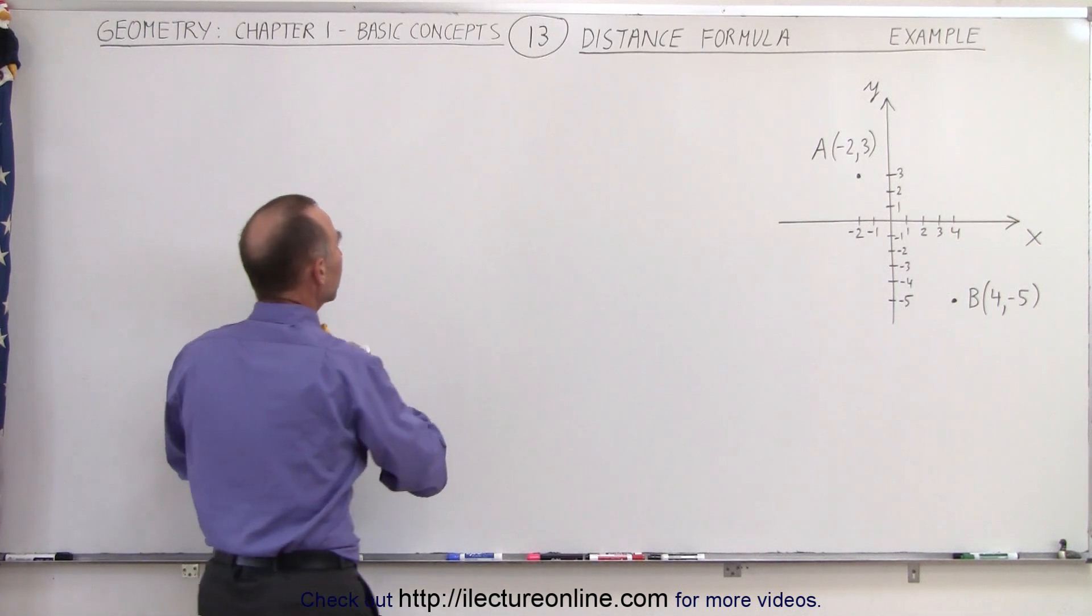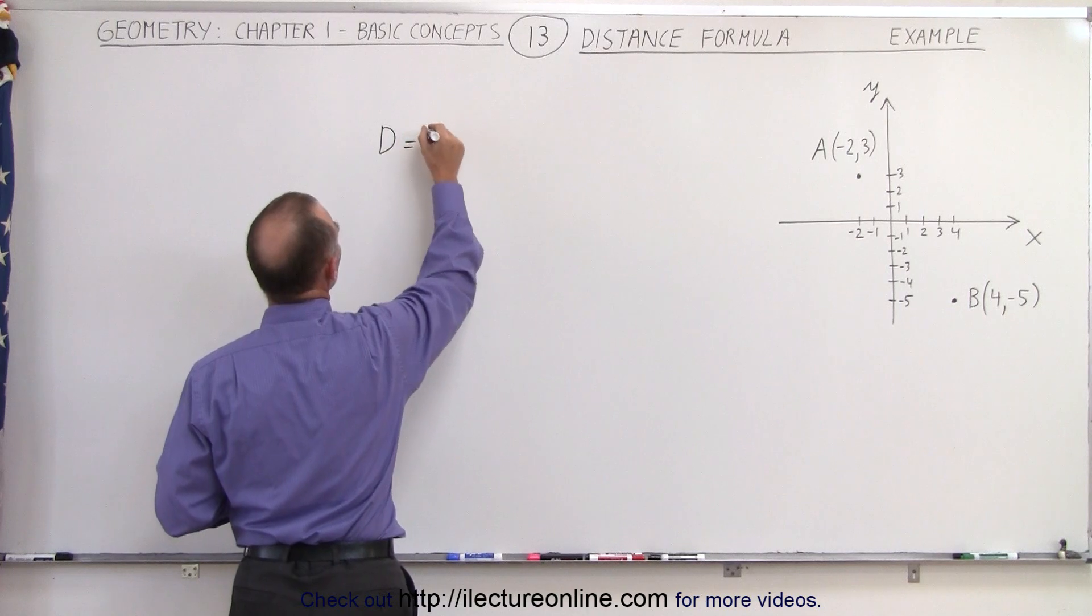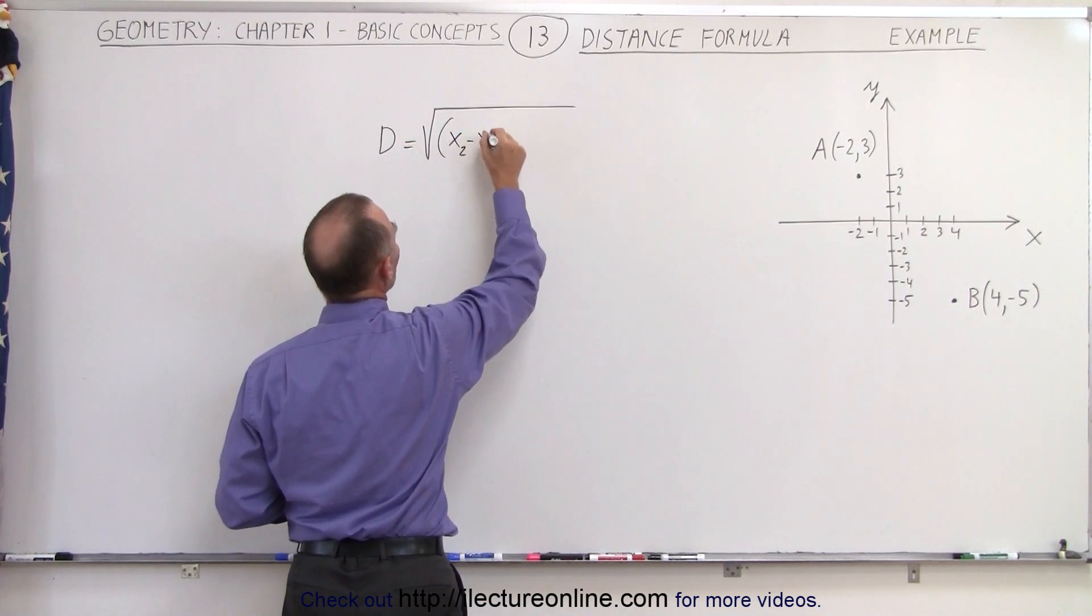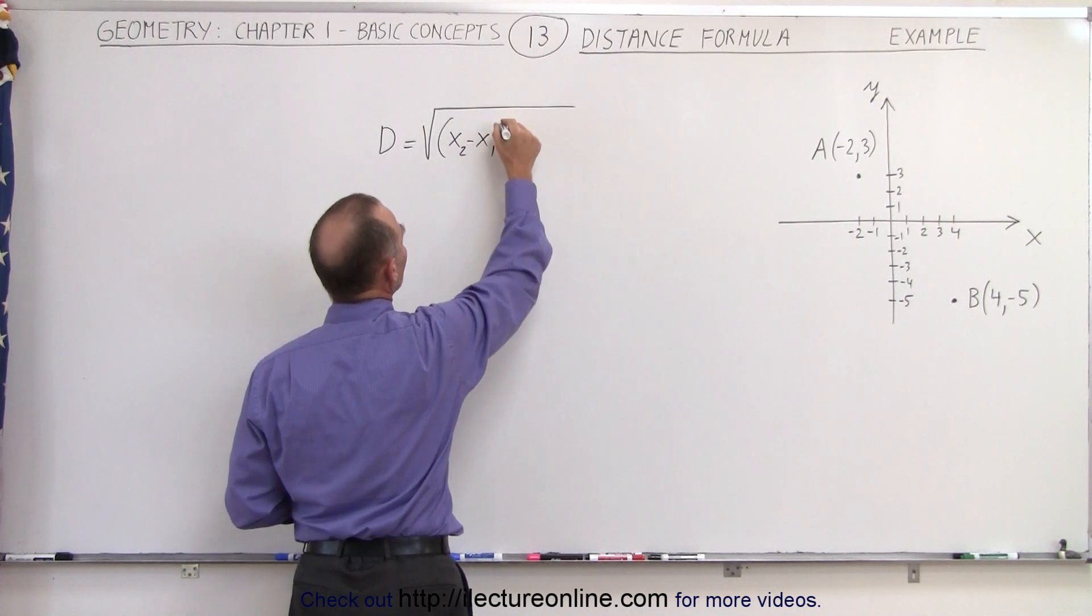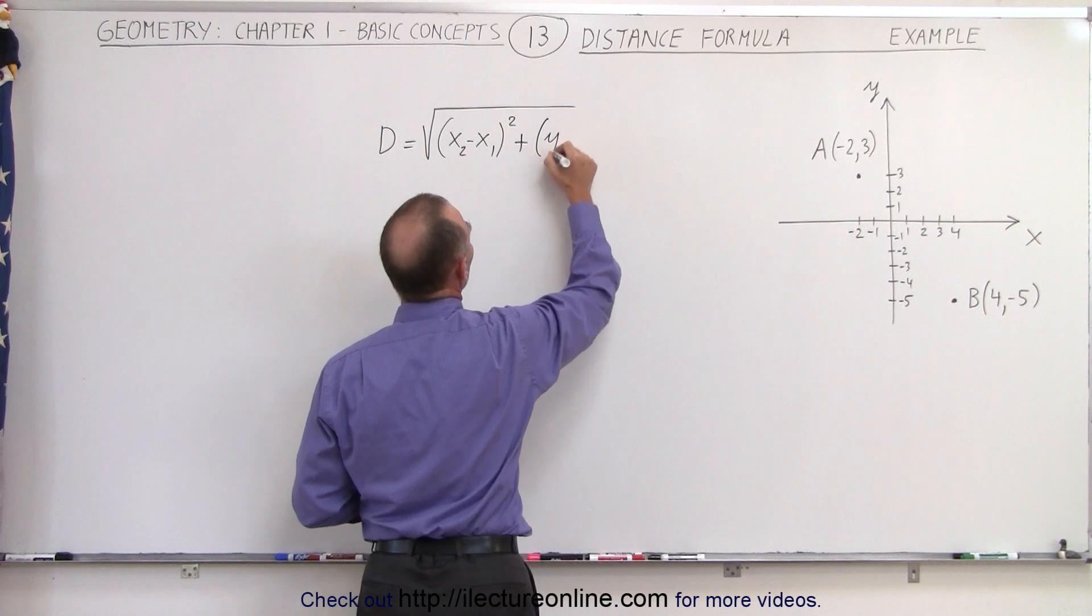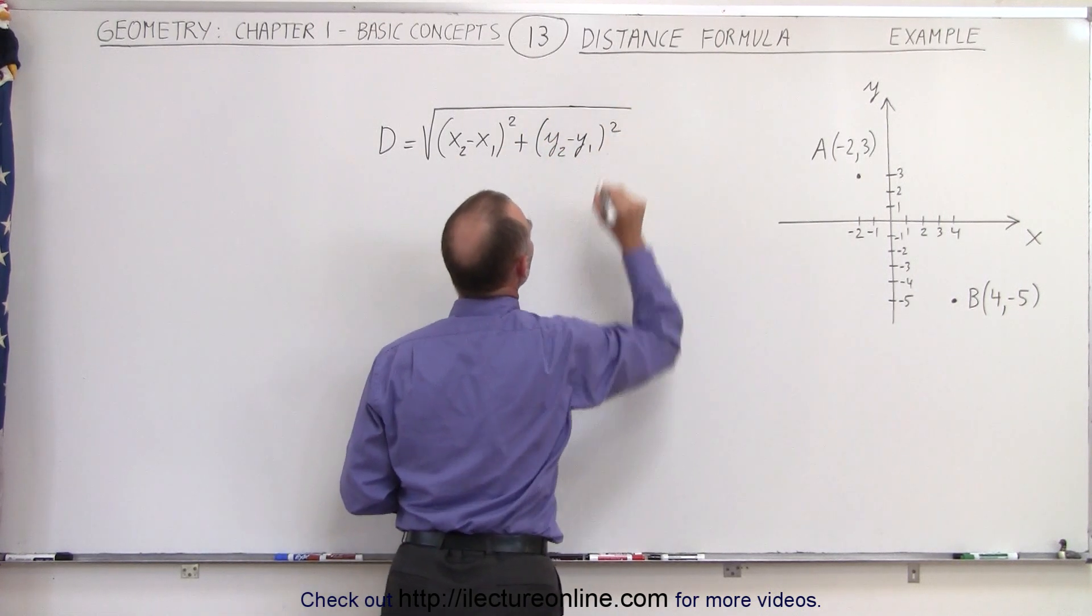Now the distance formula can be written as follows. The distance between those two points is equal to the square root of the difference between the x coordinates. We'll write it as x2 minus x1 quantity squared plus the difference between the y coordinates y2 minus y1 squared of the two points.